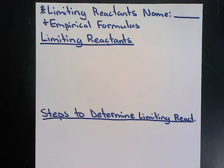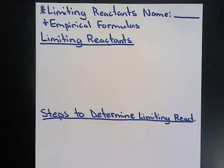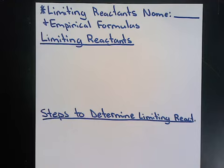Before we get into the details of the notes, I want to outline a few objectives we should be able to meet by the end of this video. Number one: calculate the empirical formula of a compound given analytical data such as elemental percentage or quantity of CO2 and H2O produced by combustion. Number two: calculate the molecular formula given the empirical formula and molecular weight. Number three: calculate the mass of a substance produced or used in a chemical reaction. Number four: determine the limiting reagent in a reaction. Number five: calculate the theoretical and actual yield of a chemical reaction given appropriate data.